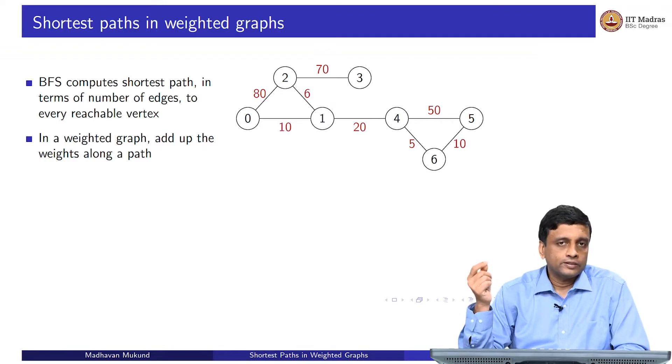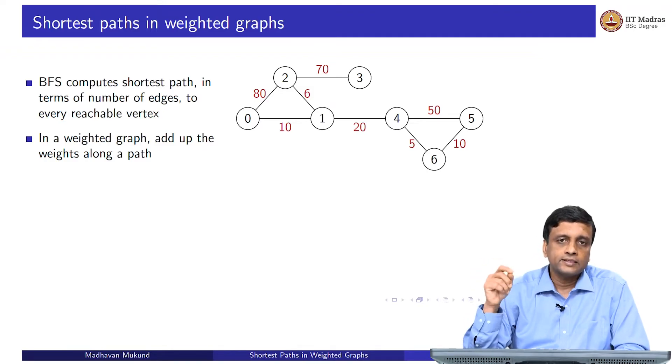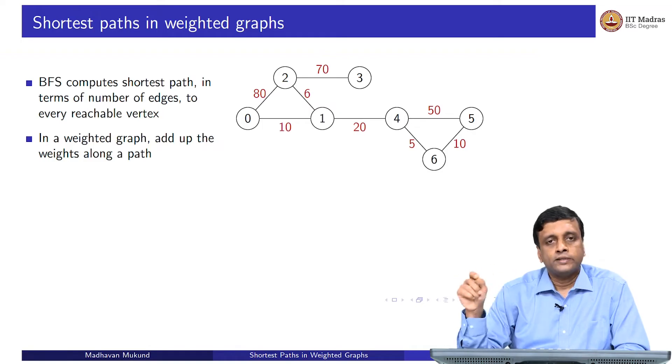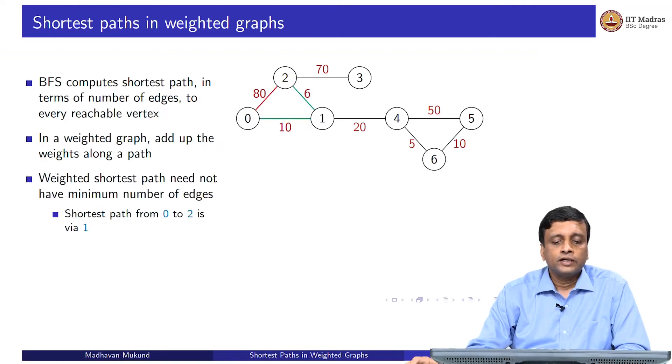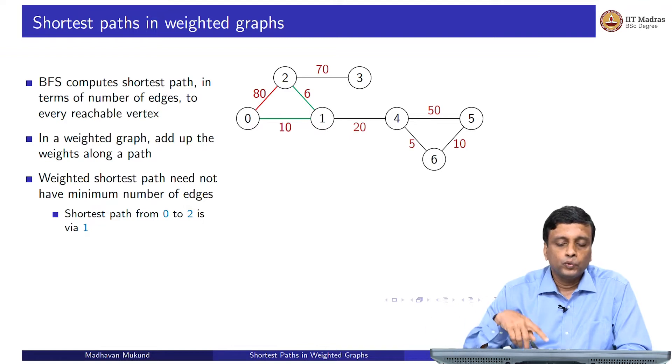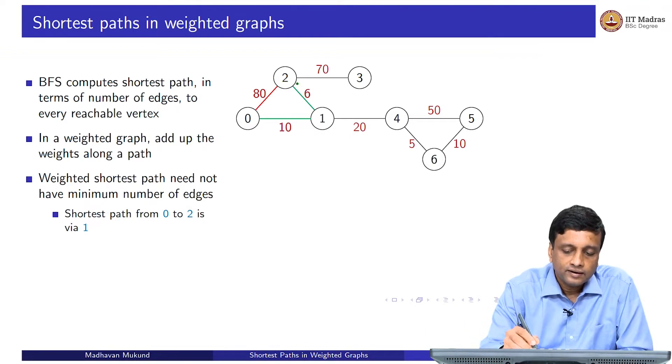If we look at a weighted graph, we want to add up the costs as we go. These costs could represent different things - it could represent time, it could represent distance and so on. As I follow an edge, I incur a cost. If I follow two edges, I incur the sum of the cost. I add up all the weights along the path. Here, if you look at this example, the shortest path from 0 to 2 is actually of weight 16 via 1.